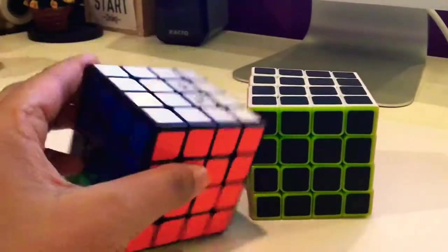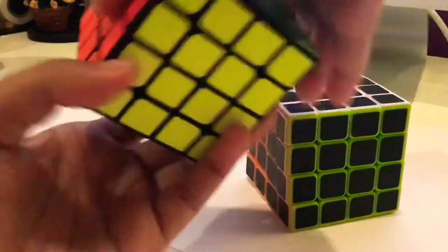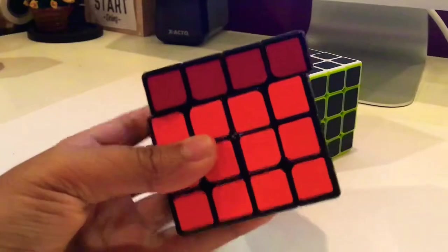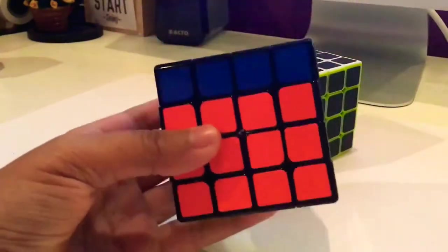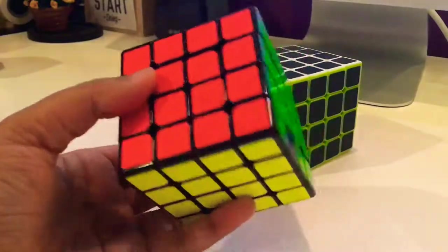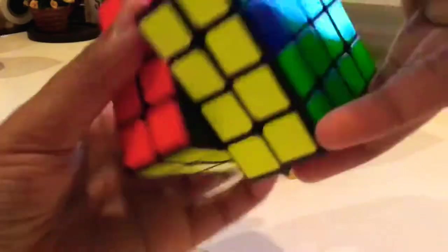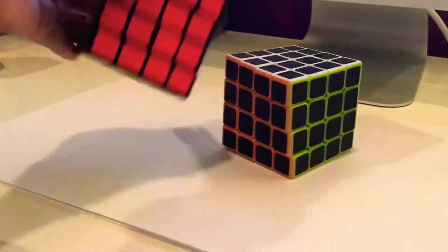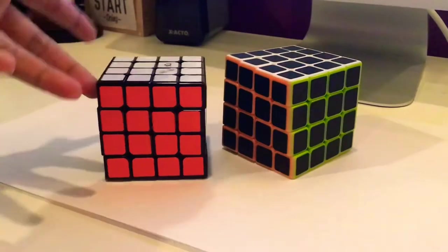This is the Mini Wuque M 4x4. It's magnetized and I really like the color shades except the fluorescent orange. I like how the outer layers don't have that big of a magnetic bump while the inner layers are really bumpy. Overall, this is my main 4x4 and it really fits my finger size as my fingers are small. I totally recommend this for a main.